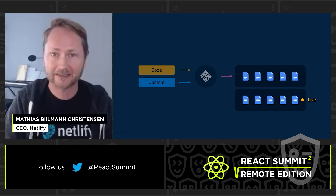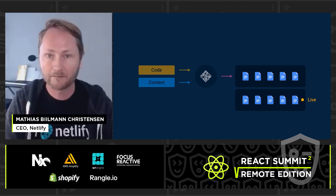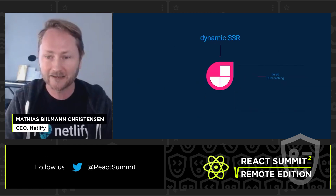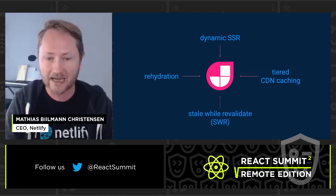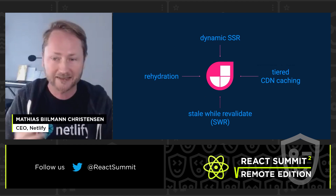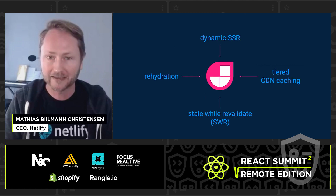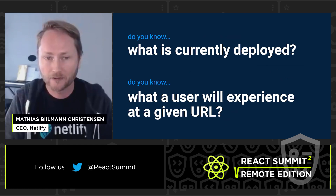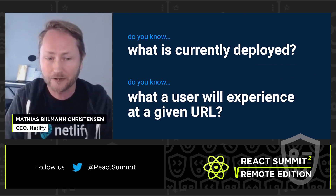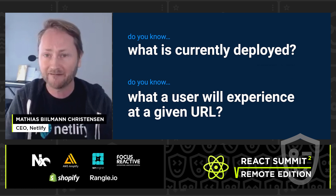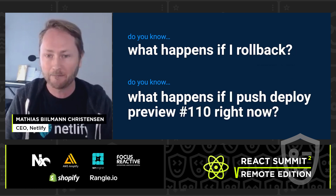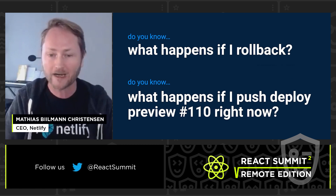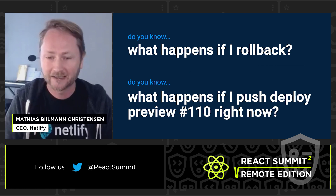In a similar way to React, as we want the JAMstack architecture to solve more complex problems and build applications in the gray zone of different use cases, we're seeing more complex concepts introduced: rehydration, dynamic SSR for some pages, tiered CDN caching, incremental static regeneration, and stale-while-revalidate HTTP headers. As we build this future, we have to ask ourselves: do you know what is currently deployed at any stage? Do you know what a user will experience if they visit a given URL? Do you know what happens if you roll back to an earlier deploy, or push a deploy preview to the main branch?